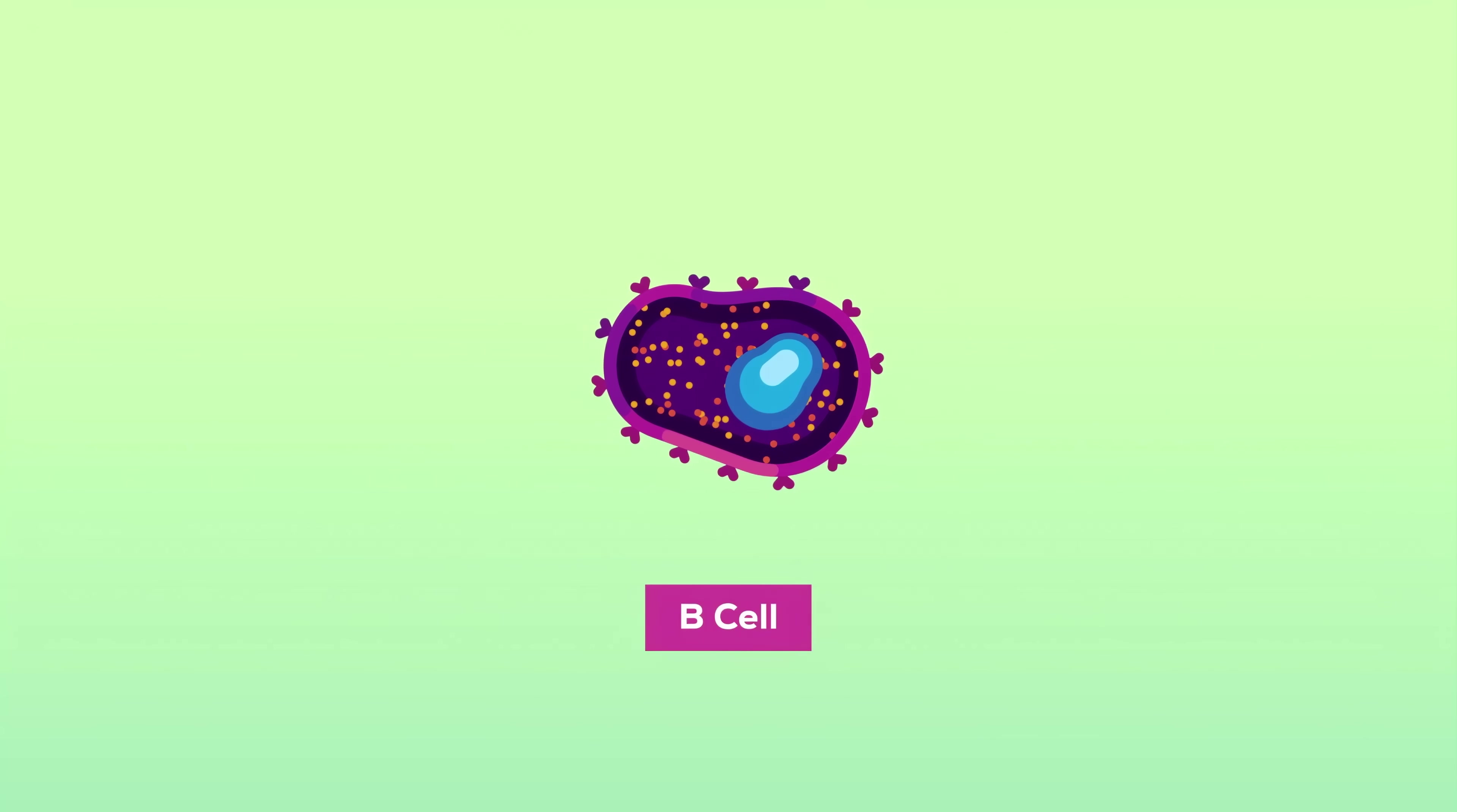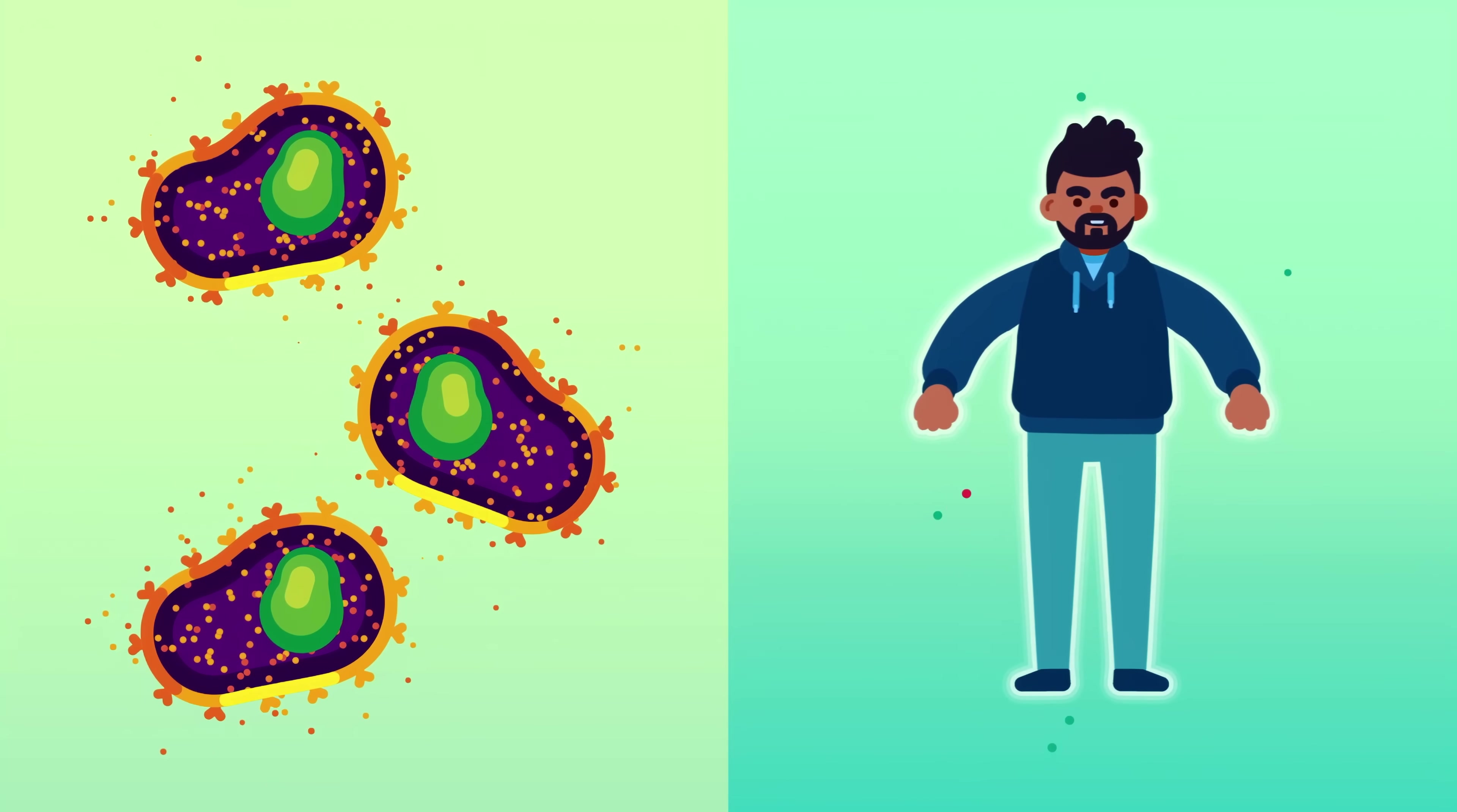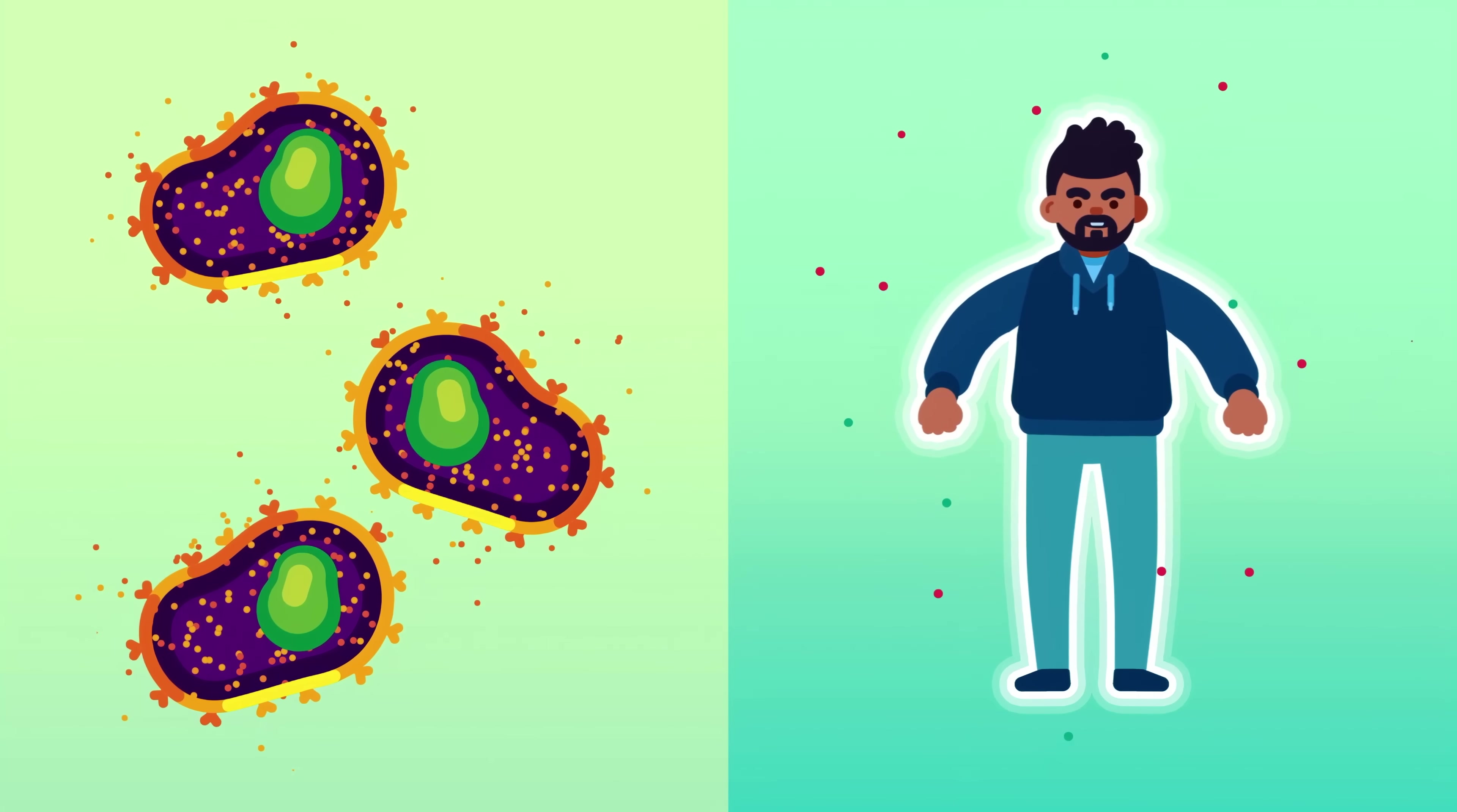Similarly, a few B cells will stay alive and keep producing a low amount of antibodies, making you immune against this bacteria, maybe for the rest of your life.